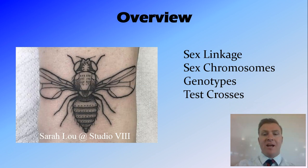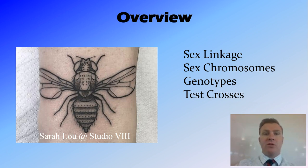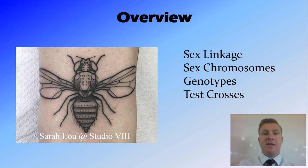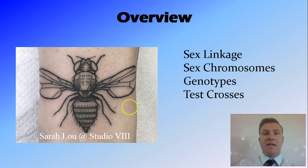In this video we've defined sex linkage as a trait whose expression depends on the sex of the organism. We've worked out that this is because those genes are found on the sex determinant chromosomes — that 23rd pair — and because of the size difference between X and Y, some genes coded on the X don't have a counterpart on the Y. We've looked at the possible genotypes — two for males and three for females: homozygous dominant, homozygous recessive, and heterozygous — and done a couple of example crosses. Thanks for watching, guys.